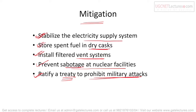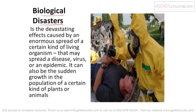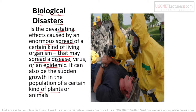The next is biological disaster. Biological disaster is the devastating effect caused by the enormous spread of certain living organisms that may spread a disease, virus, or epidemic. It can also be a sudden growth of population of certain plants or animals. If any one organism's growth or disease spreads rapidly, that is a biological disaster — for example, AIDS or swine flu.